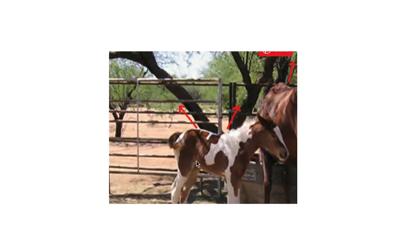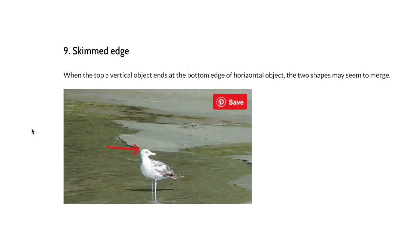Here's another example: an object behind another object that appears to be growing out of what's closest to you — like a plant behind somebody that looks like it's growing out of them. Another very common one is the skimmed edge: a figure's head lines up perfectly with a horizon line, or a car that lines up perfectly with the edge of a building. You need to avoid that — either bring the edge further down or place the bird a little bit higher.